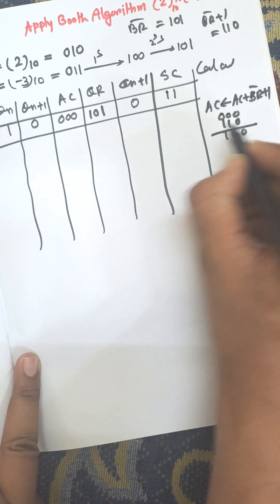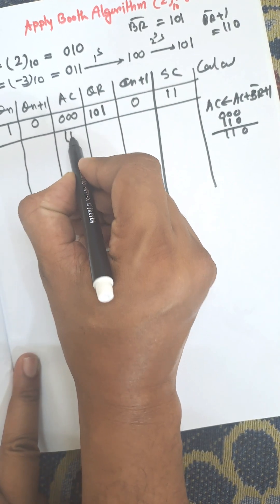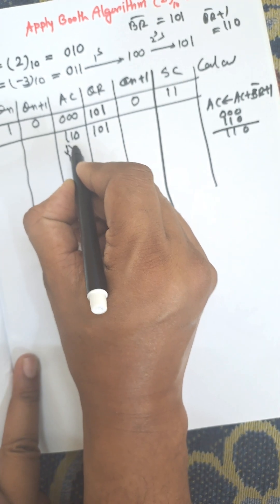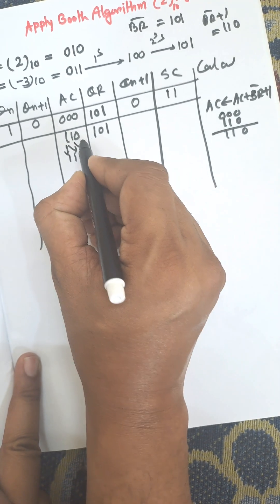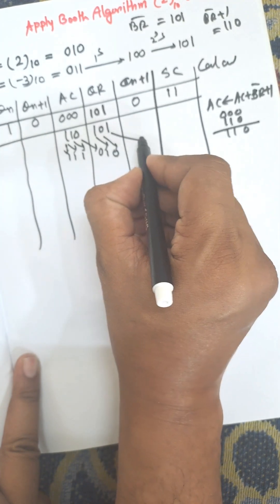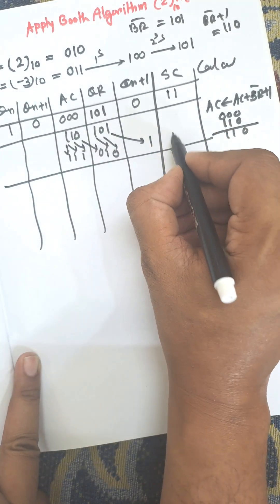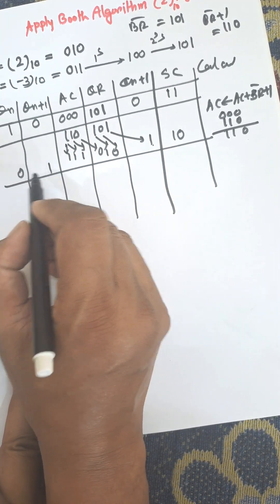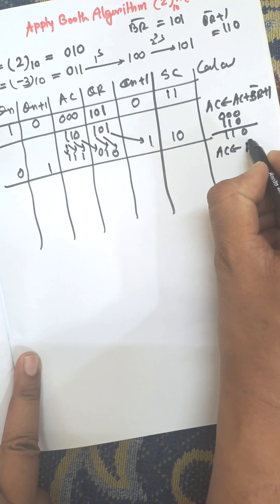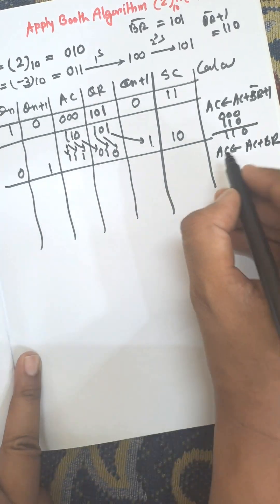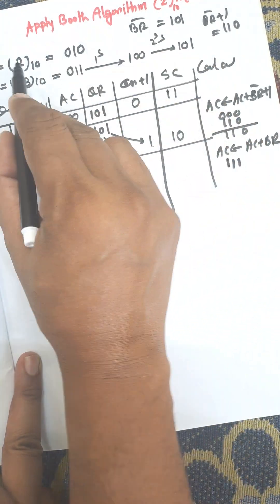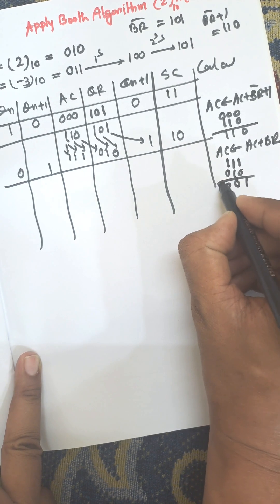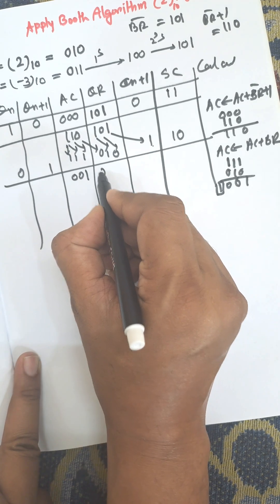Adding 0 0 0 and 1 1 0, we get the new AC as 1 1 0. The multiplier is 1 0 1. Now we perform arithmetic right shift: AC becomes 1 1 1 and the register becomes 0 1 0. The counter is decremented to 1. The carry is discarded, giving 0 0 1 and QR remains 1 0 1.